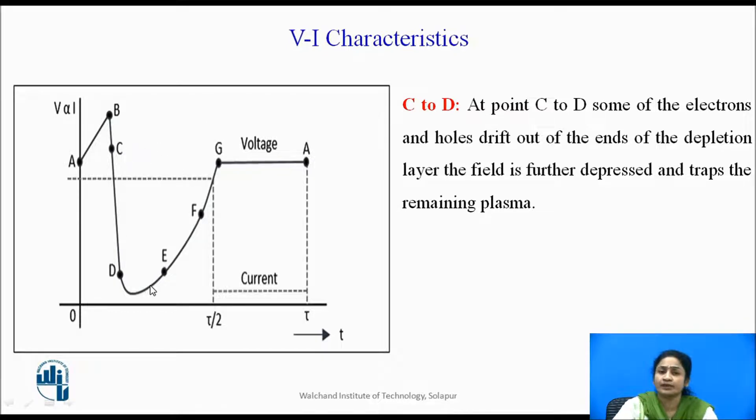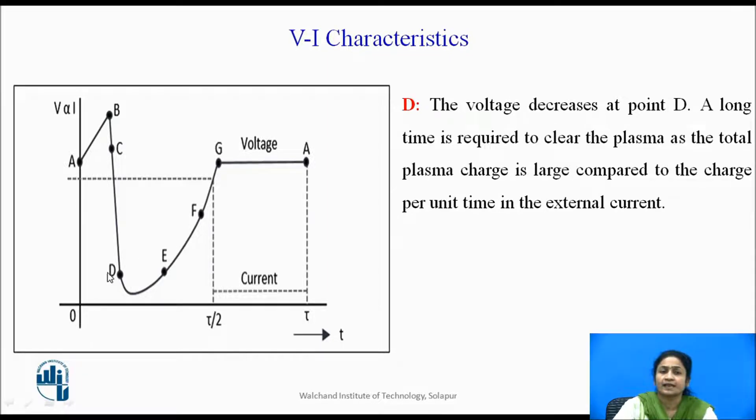From C to D point, some electrons and holes drift out at the end of the depletion region, and this takes sufficient time to remove these charges.